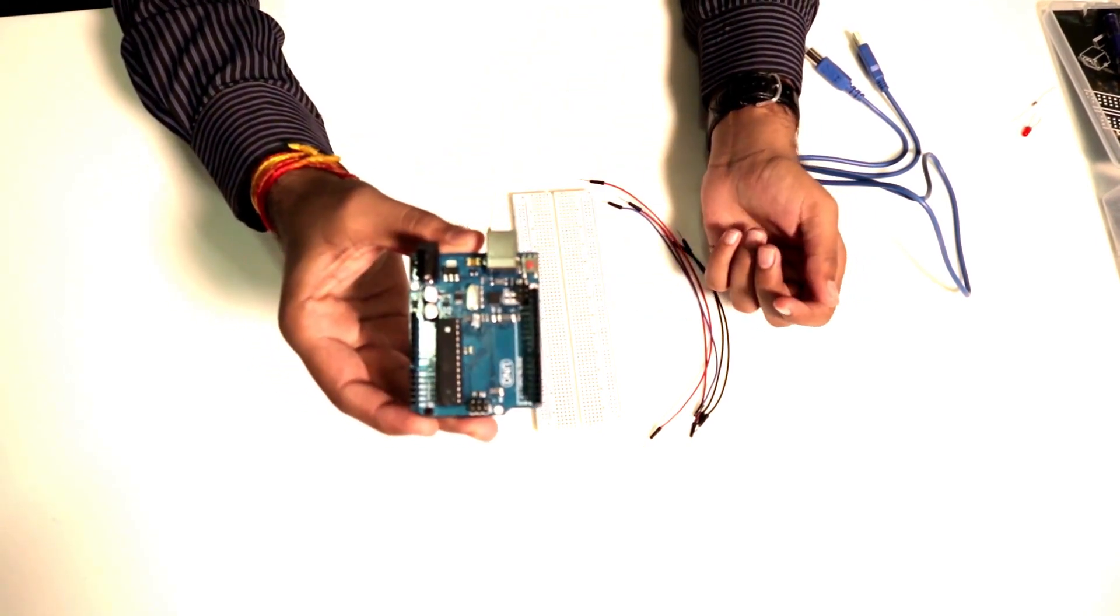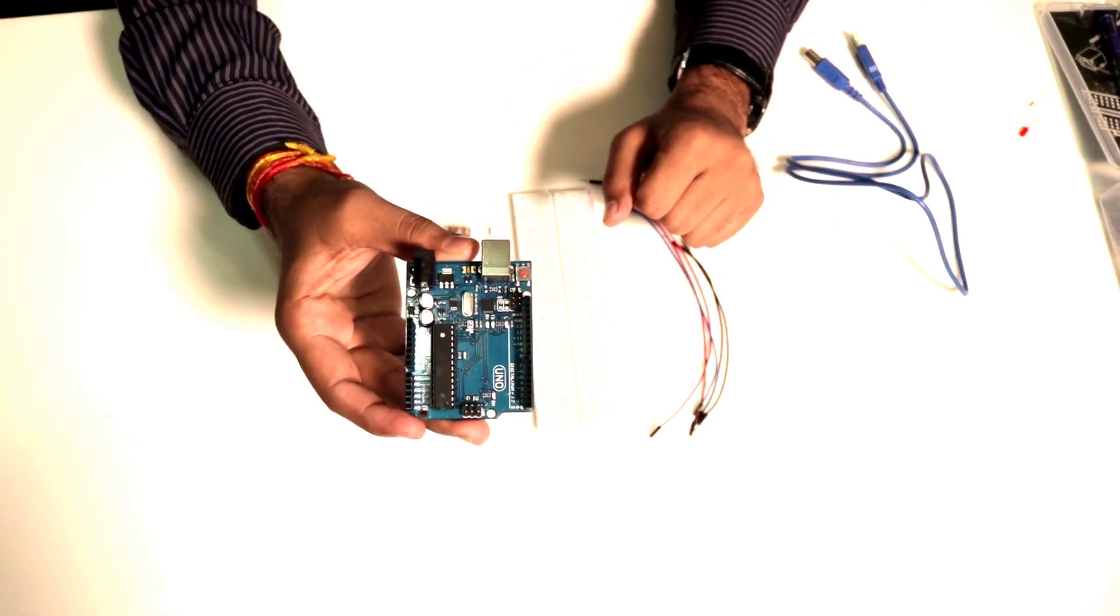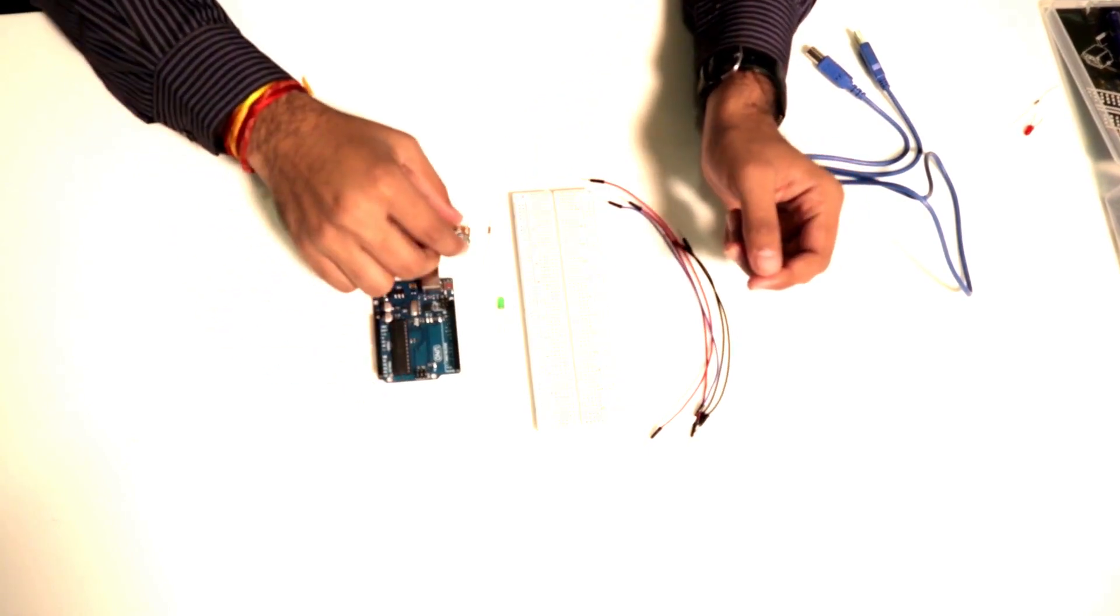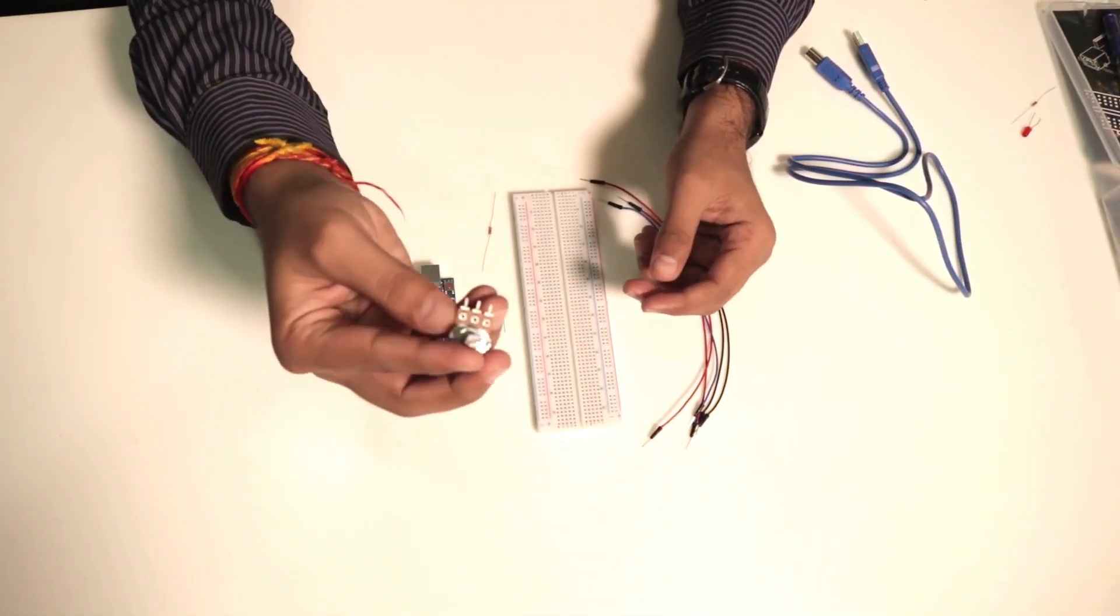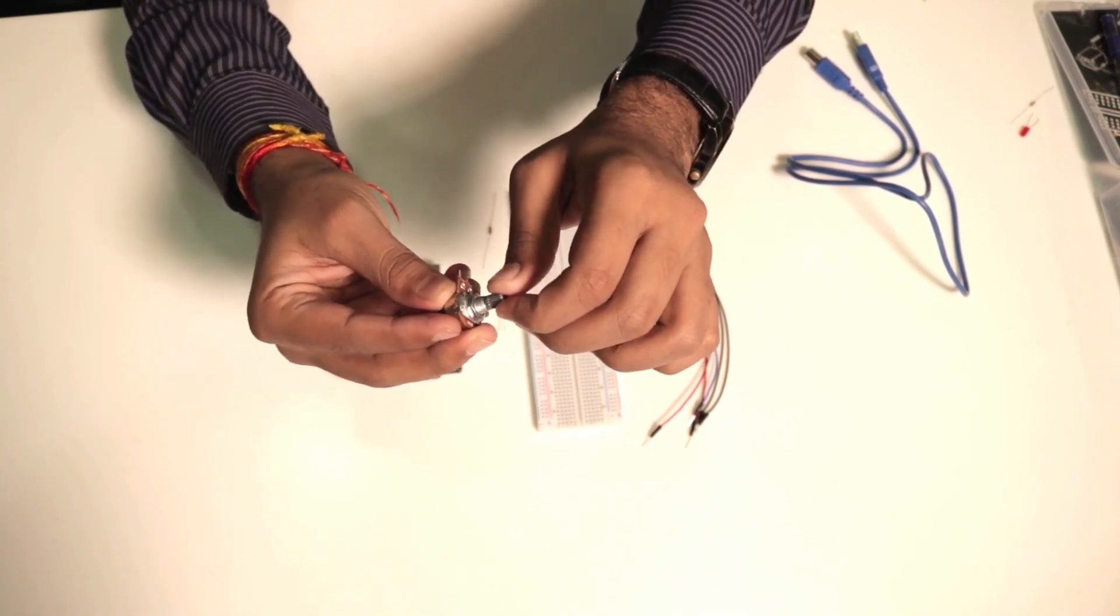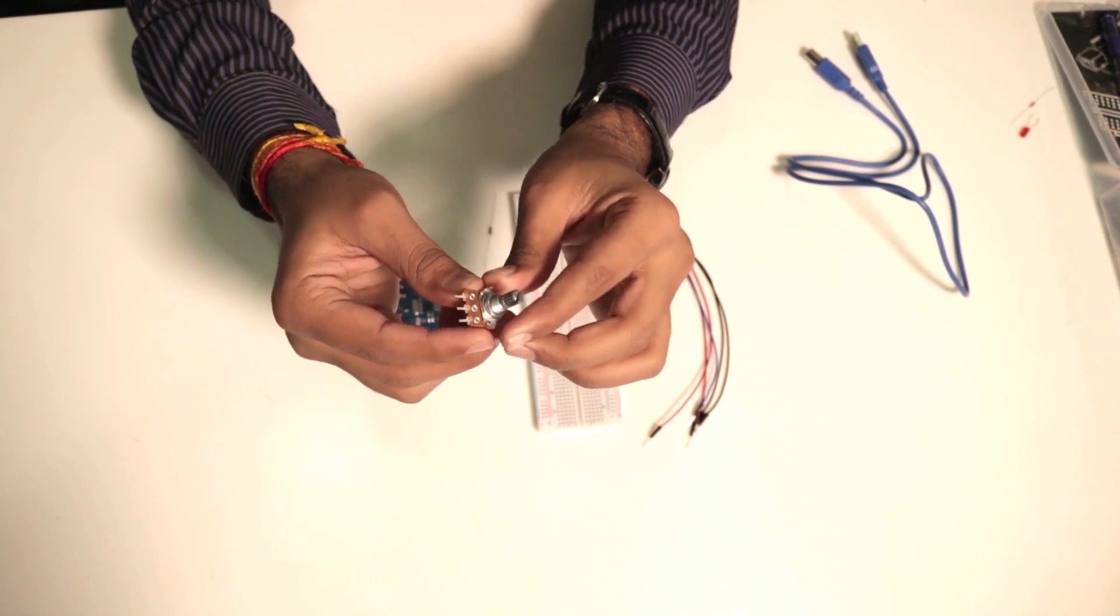So we require this Arduino UNO board to connect our LED with its digital pin and we also need this potentiometer. This is the knob of a potentiometer and there are three pins.